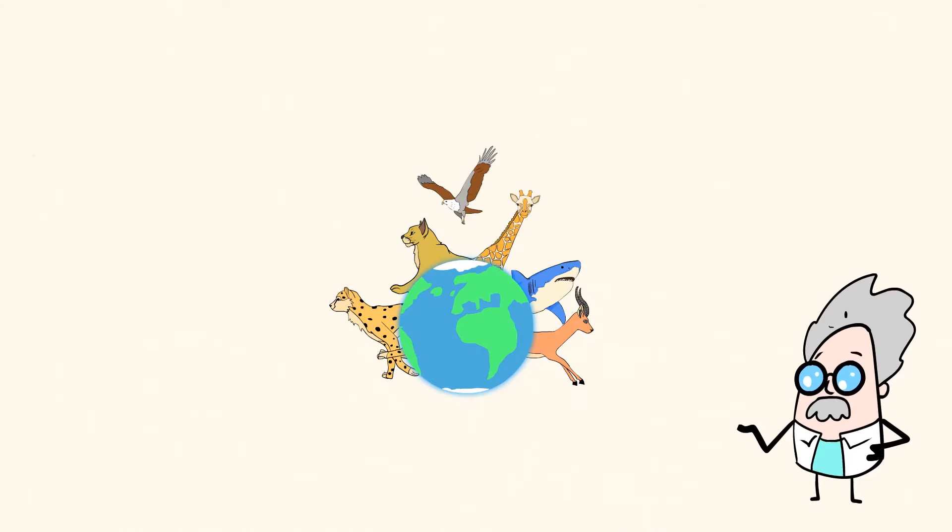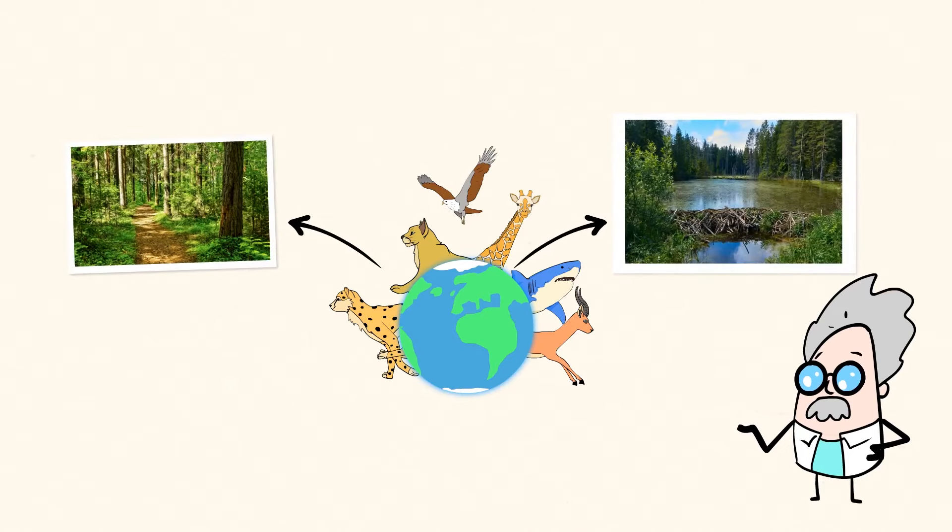All animals change the land or water that they live on in some form, and so do plants. Those could be such mighty changes. Let's take a look at how and why living things change the environment.